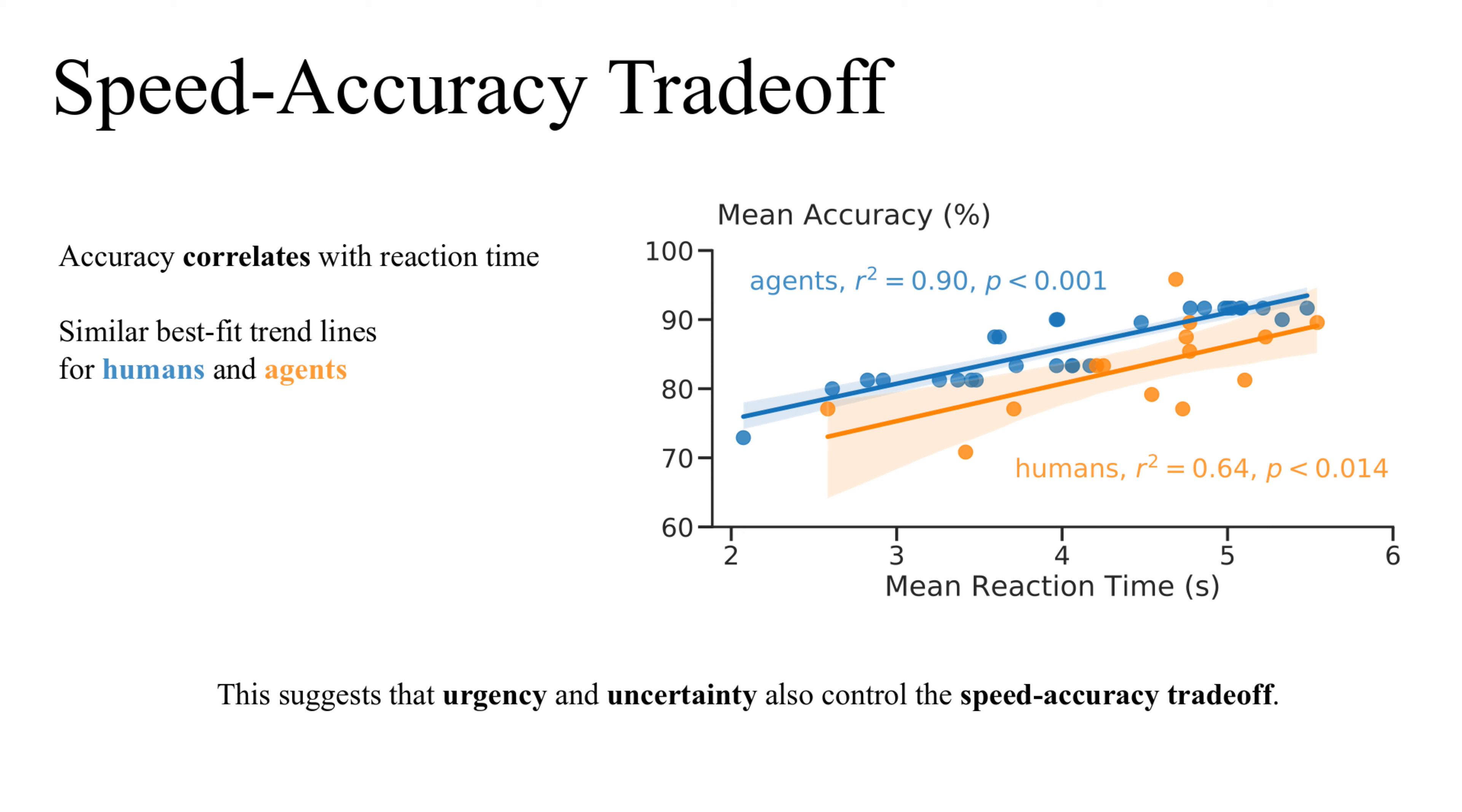Finally, we compared the accuracies of our agents to humans performing this task. For both humans and agents, we saw that accuracy correlates with decision time. This is exactly what we expect when individuals face a tradeoff between speed and accuracy during decision making. This suggests that urgency and threshold also determine preferences for speed versus accuracy.